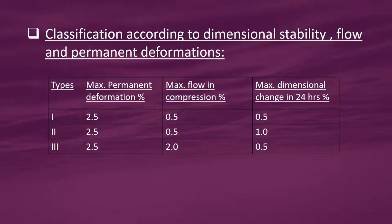Classification according to dimensional stability, flow and permanent deformations — there are three types. Type 1: maximum permanent deformation 2.5%, maximum flow in compression 0.5%, maximum dimensional change in 24 hours 0.5%. Type 2: maximum permanent deformation 2.5%, maximum flow in compression 0.5%, maximum dimensional change in 24 hours 1%. Type 3: maximum permanent deformation 2.5%, maximum flow in compression 2%, maximum dimensional change in 24 hours 0.5%.